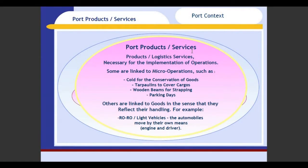Port products and services are the products and logistics services necessary for the implementation of operations. Some are linked to micro-operations, such as cold storage for the conservation of goods, tarpaulins to cover cargoes, wooden beams for strapping, and parking days. Others are linked to goods in the sense that they reflect their handling — for example, Roll-Roll light vehicles, where the automobiles move by their own means, engine and driver.